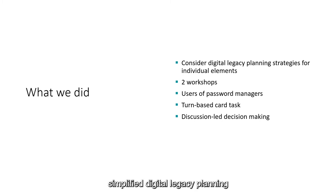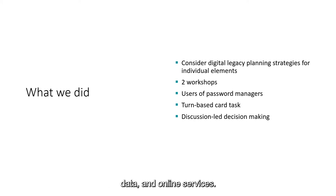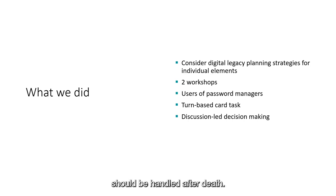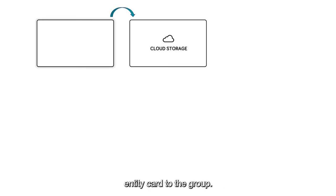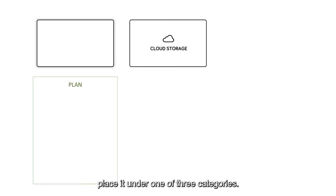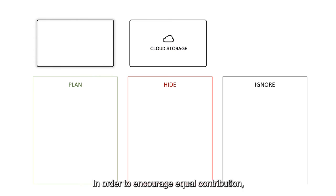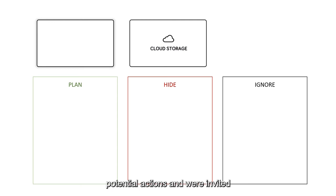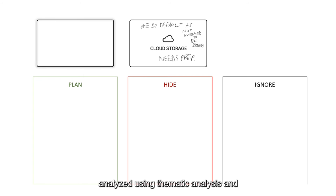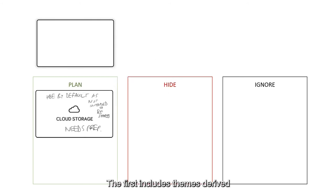Our study considered a simplified digital legacy planning process in which plans were performed for specific types of files, data, and online services. Over two workshops held with participants who used password managers, we used a turn-based card task to facilitate in-depth discussion about how certain digital legacies should be handled after death. The participant whose turn it was drew and announced a digital entity card to the group, who then collectively placed it under one of three categories: plan, hide, or ignore. The person who drew the card had final say. Participants debated potential actions and annotated the cards, and the resulting conversational data was analysed using thematic analysis.